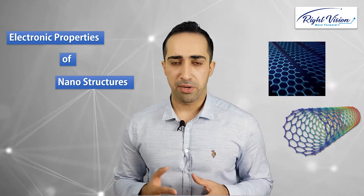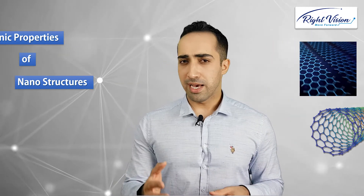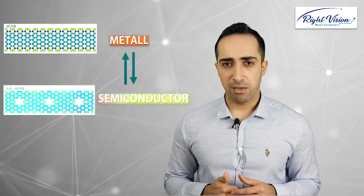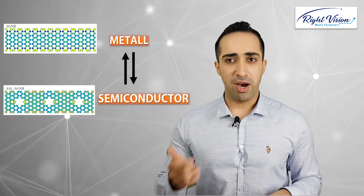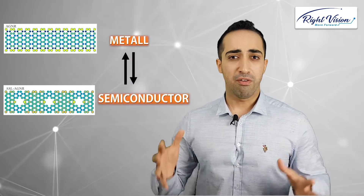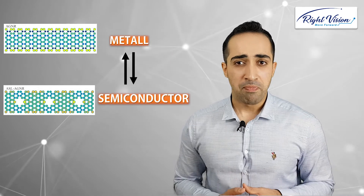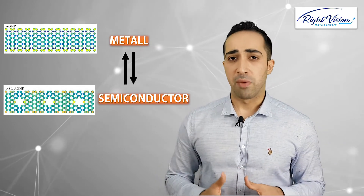Nanoribbons and carbon nanotubes. At the end of this course I'll show you how you can convert a metallic graphene nanoribbon to a semiconducting material, or vice versa, by imposing some defects throughout the body of that graphene structure.